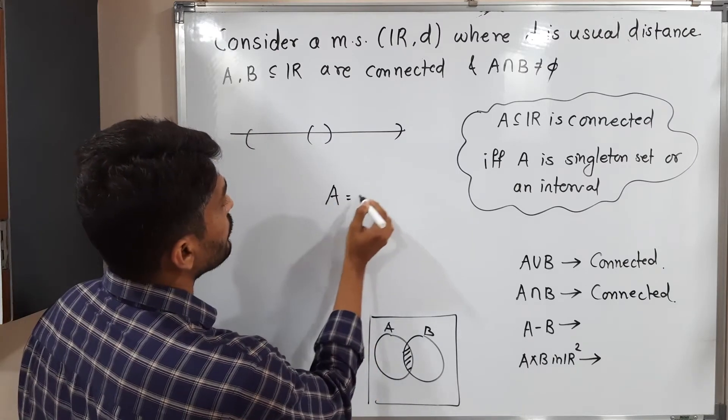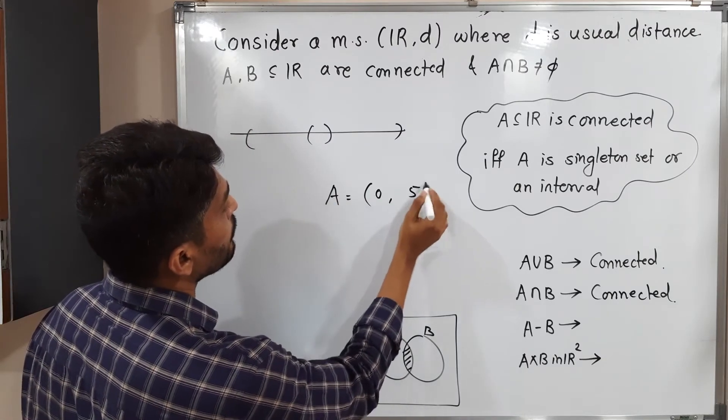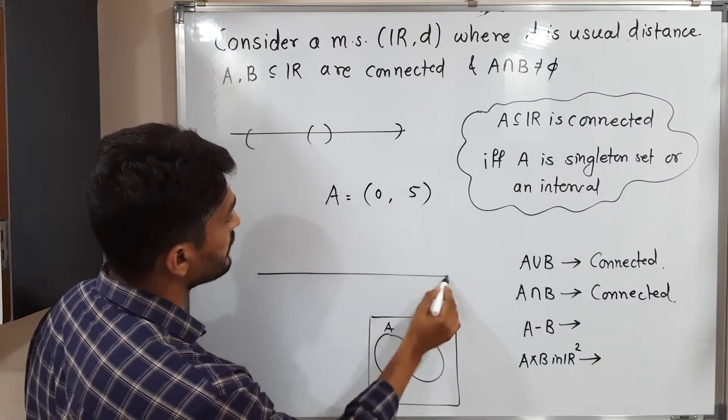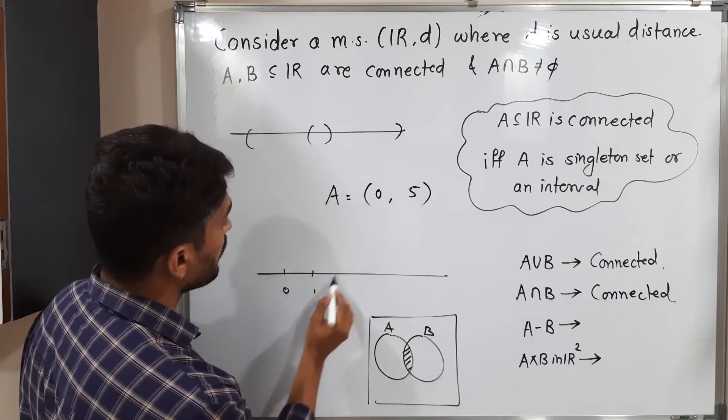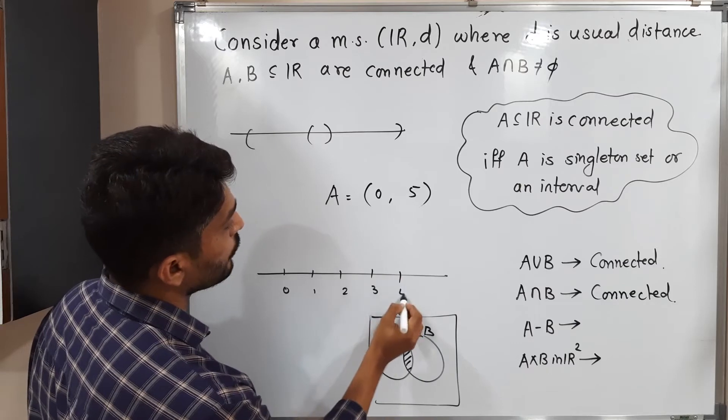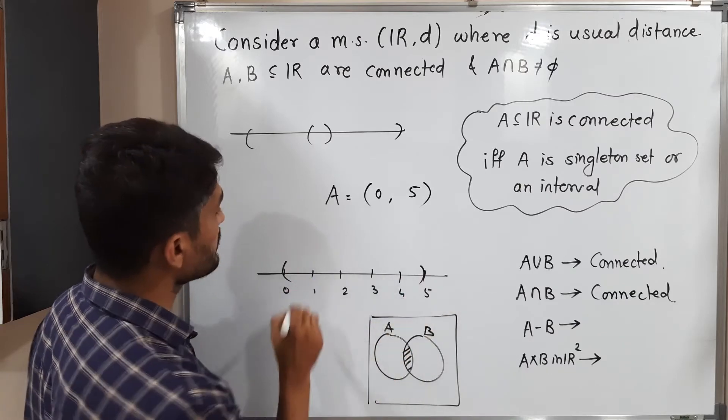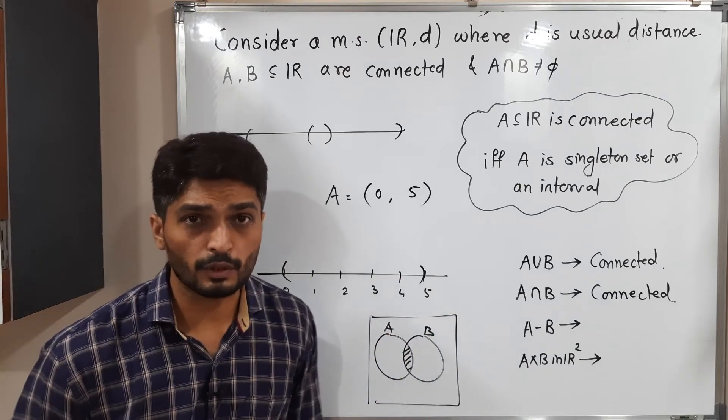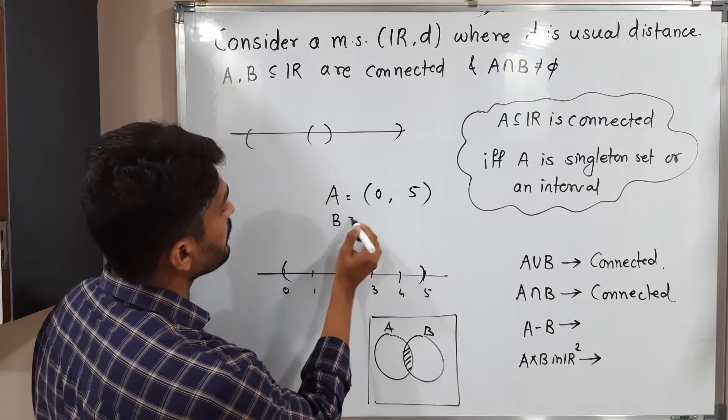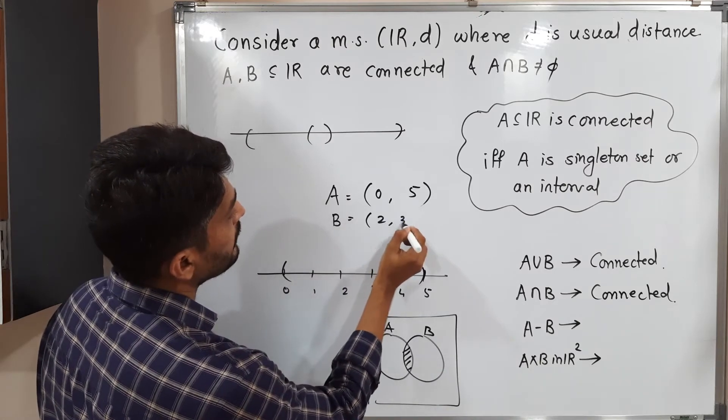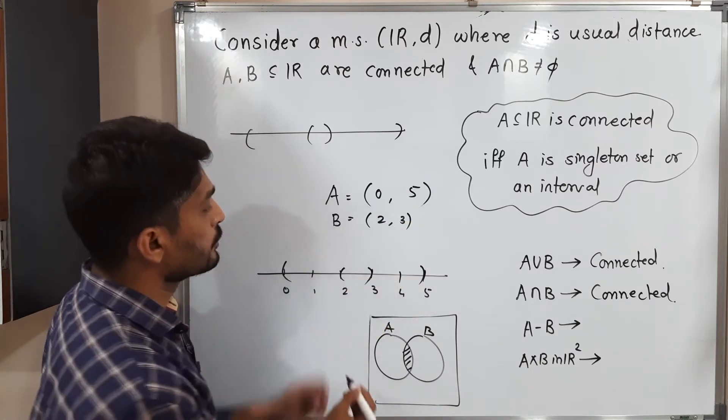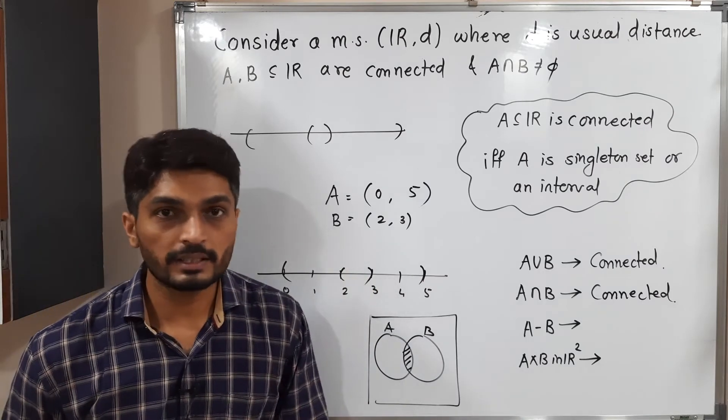Consider A is equal to open interval (0,5). I will draw the diagram so you can easily understand. 0, 1, 2, 3, 4, 5. So this is an interval. That's why it is a connected subset of R. B is equal to (2,3). So 2, 3. Set B. Again, it is an interval. It is connected.